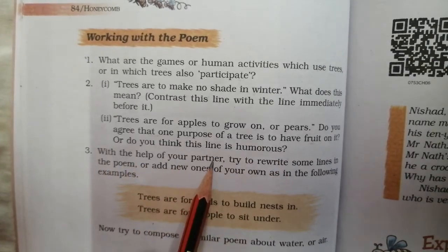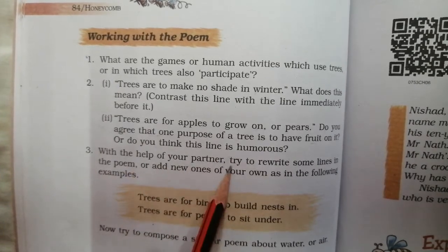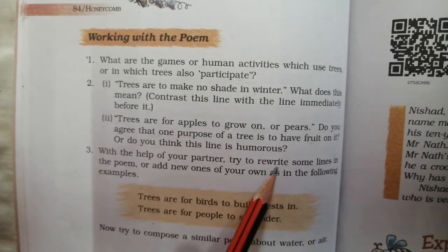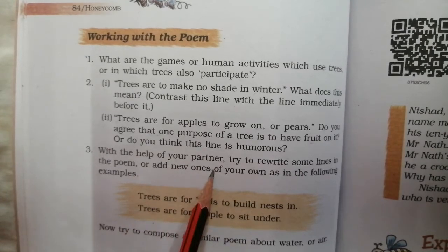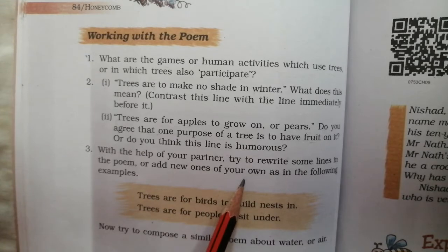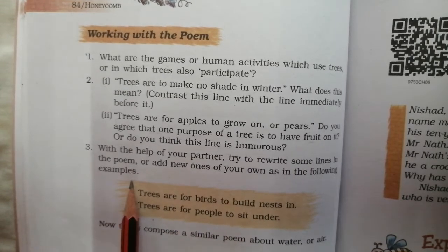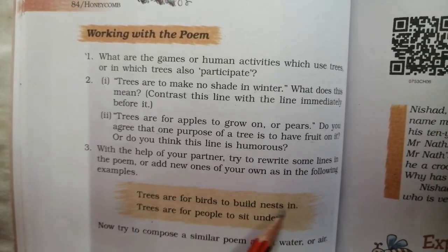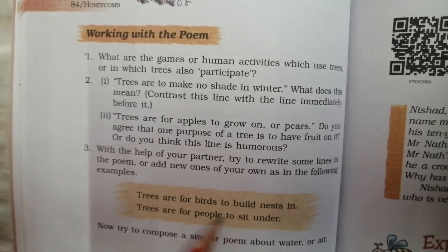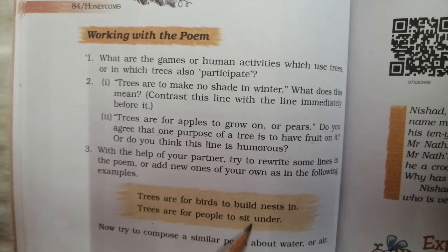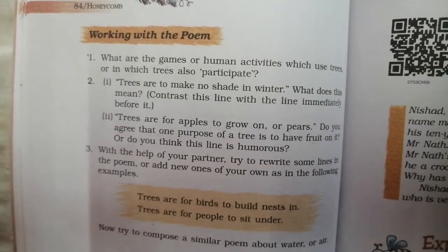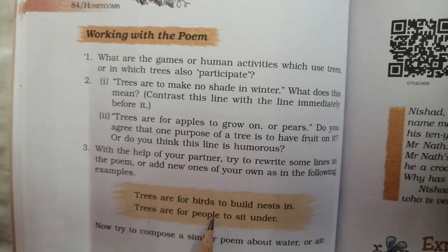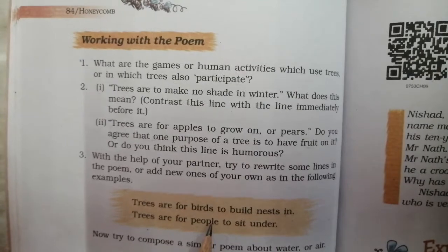With the help of your partner, Question No. 3: apne partner ki madad se, try to rewrite some lines in the poem — is poem mein kuch line rewrite karein — and add new ones of your own — ya phir apne aap banakar kuch lines ismein add karein. As in the following examples: 'Trees are for birds to build nests' — paid hain paxiyon ke ghosle banane ke liye. 'Trees are for people to sit under' — paid hain logon ke neeche baithne ke liye. Well students, today's work is to find out the answers of these questions and learn the word meaning of this poem. Thank you.